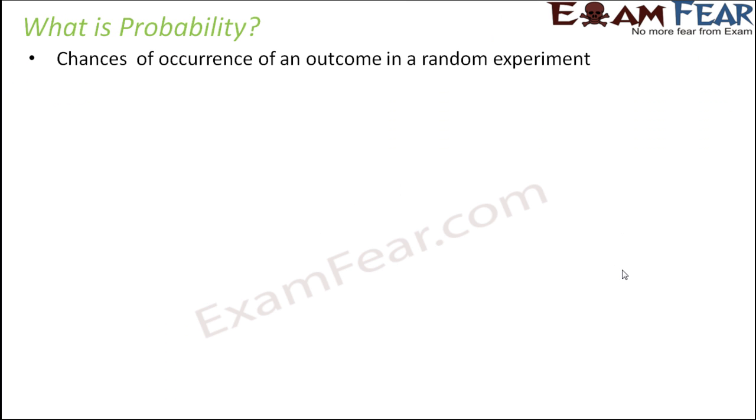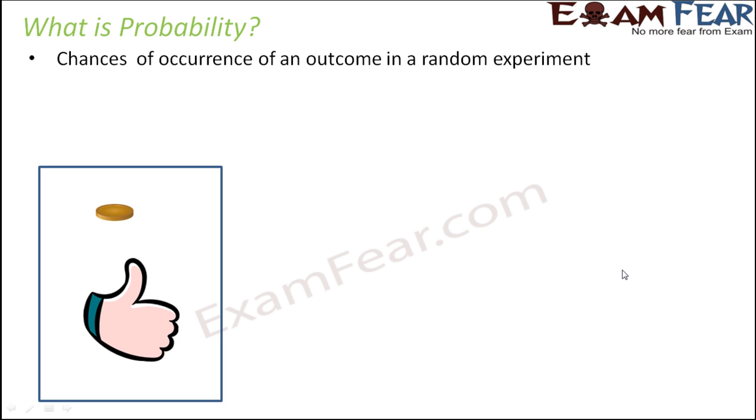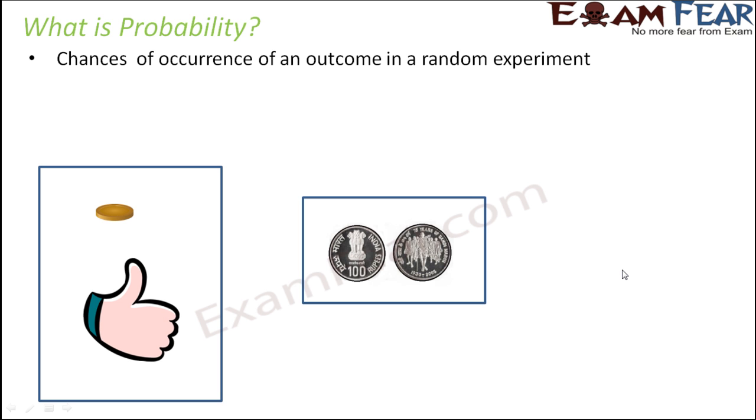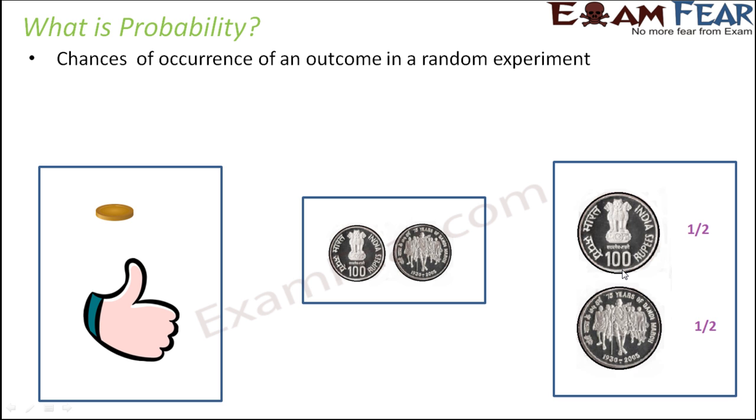So what is probability? It is the chances of occurrence of an outcome in any random experiment. What is a random experiment? It's basically about anything that we do. Tossing a coin is a random experiment. When you toss a coin, it's a random thing. You do not think and then toss a coin, you just toss it. So it's a random activity that you do, and the outcome of this activity could be one of these: it could be a head or it could be a tail.